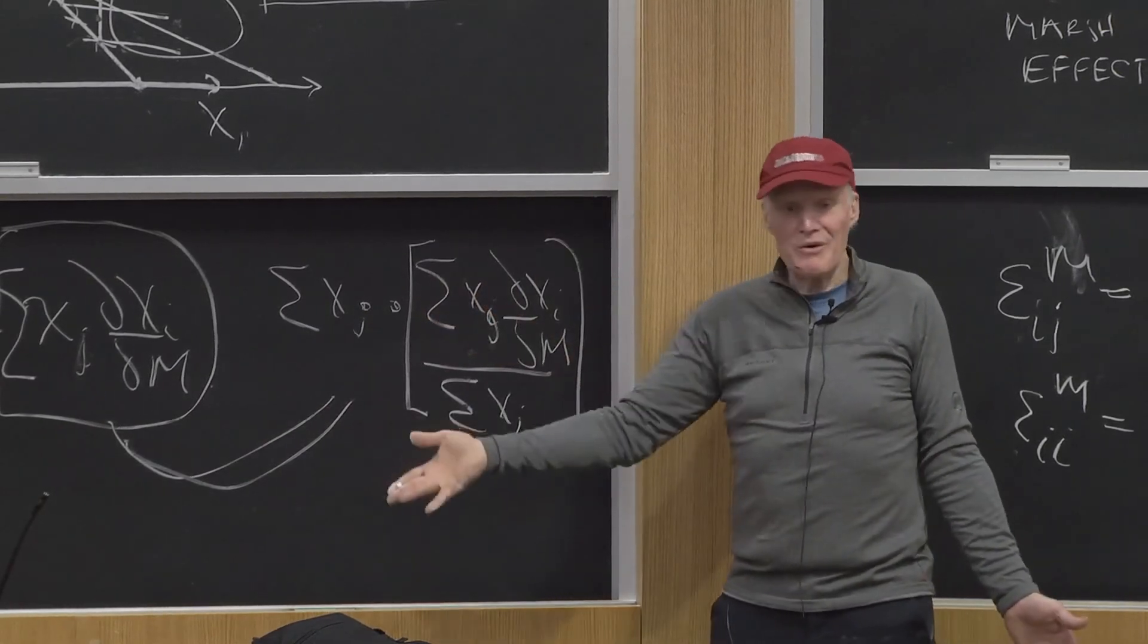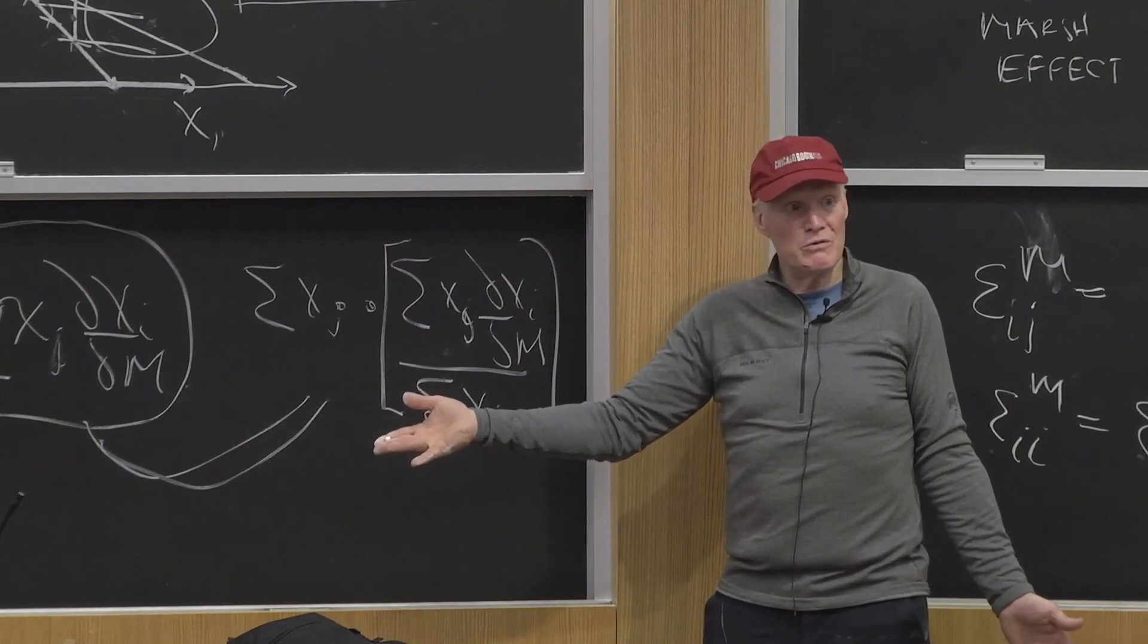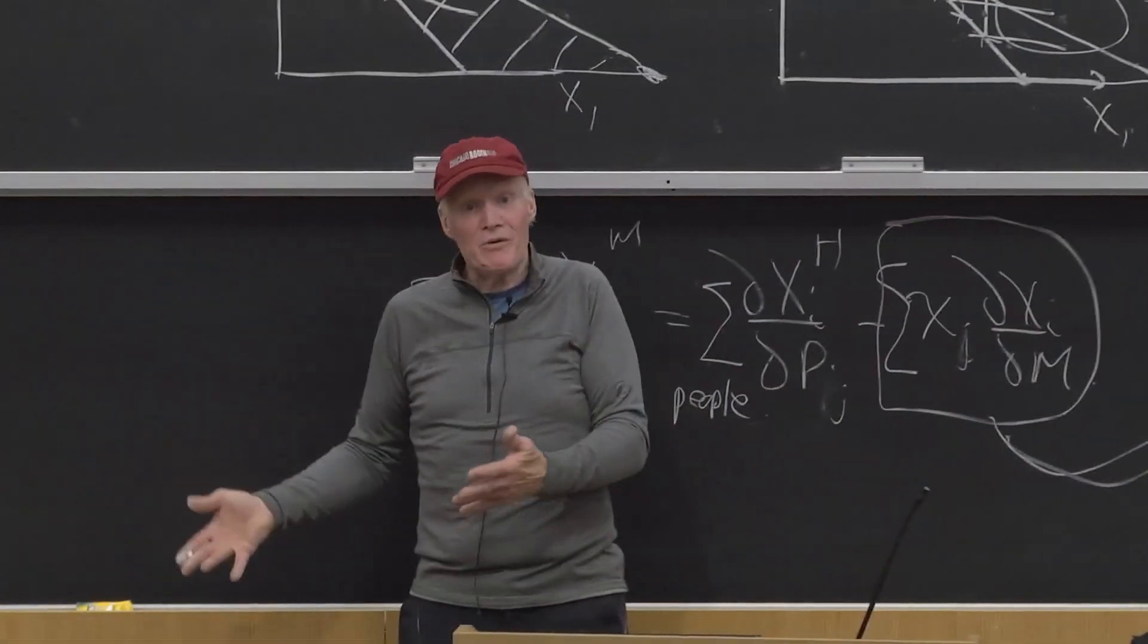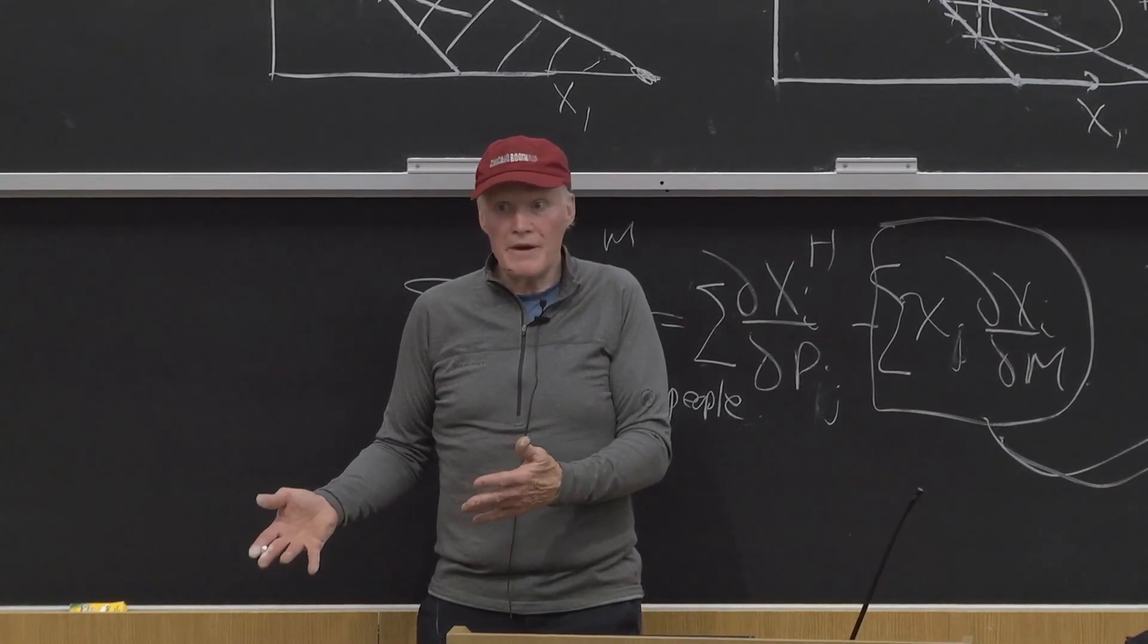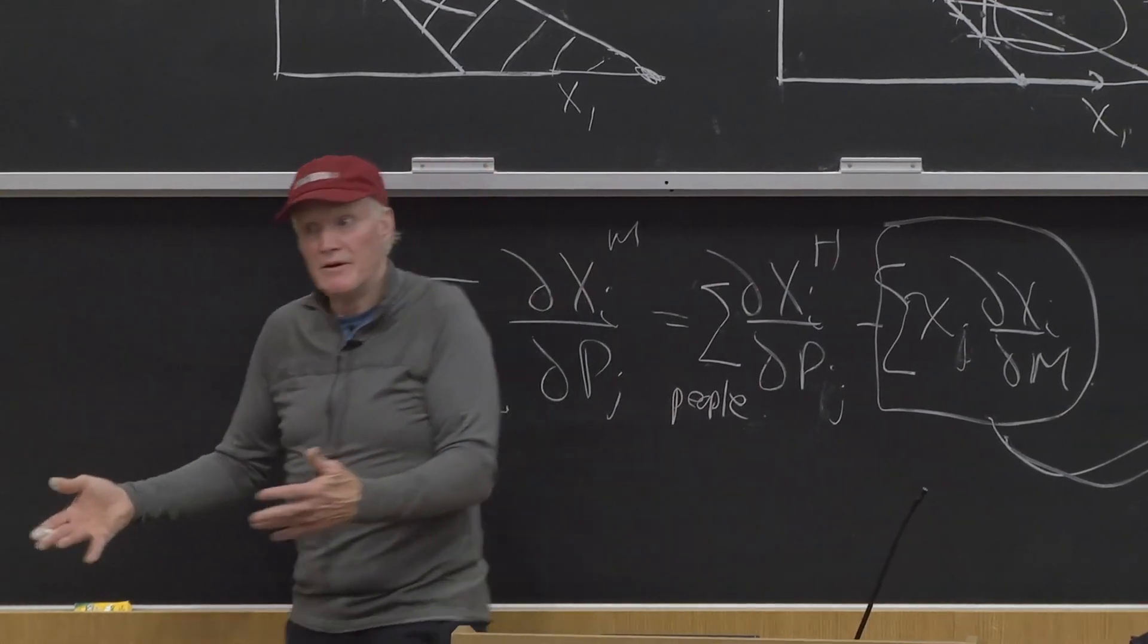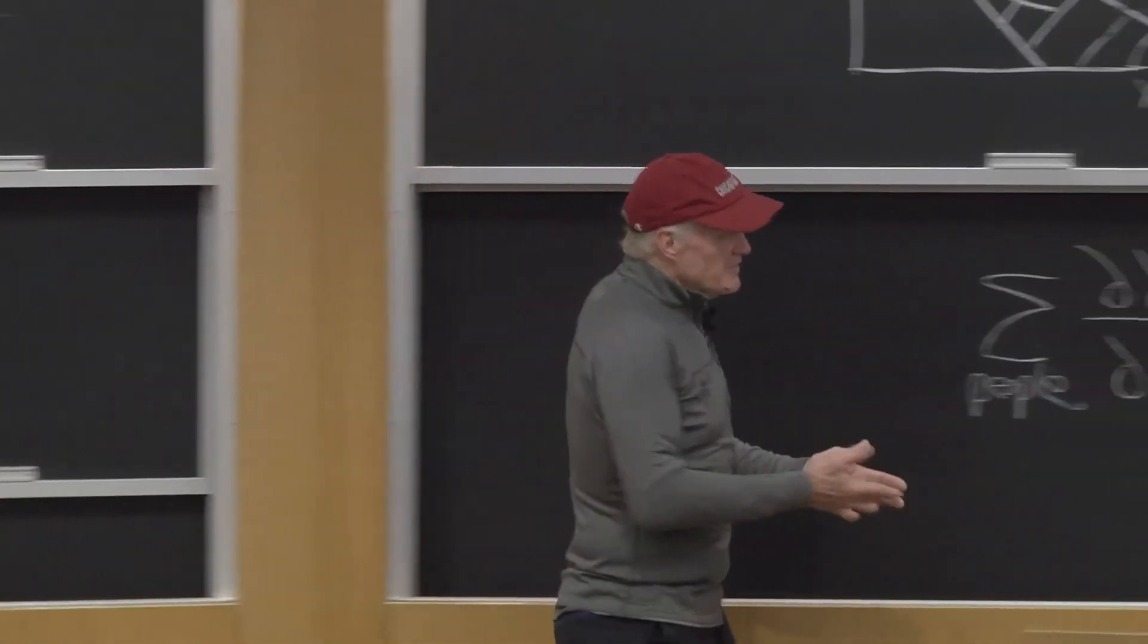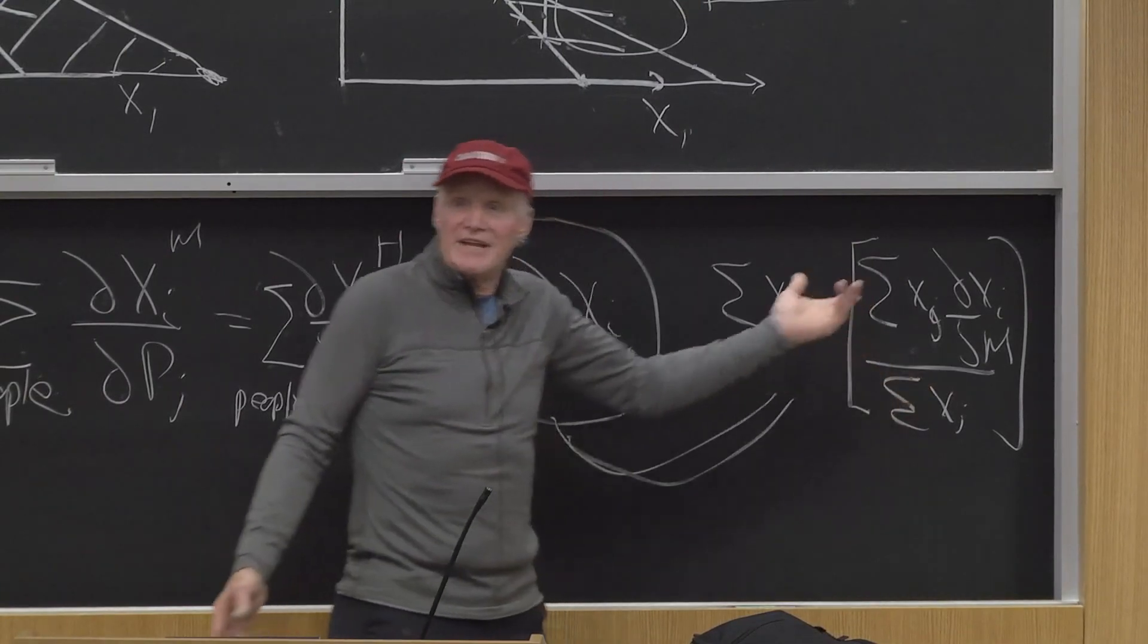If I reduce the price of donuts, that's a positive income effect for Homer Simpson and all the guys who like donuts. Guys who don't eat donuts, they don't get any more income when the price of donuts goes down. When I reduce the price of haircuts, bald guys don't get no more income. They're not going to get their hair cut to begin with. It's a different income. That's what causes the problem, and that's where all the shenanigans happen.